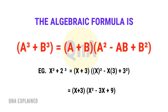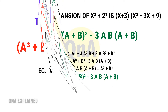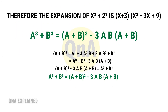Example: x cubed plus 3 to the power of 3 equals x plus 3, times x squared minus x times 3 plus 3 to the power of 2, which equals x plus 3, times x squared minus 3x plus 9. Therefore, the expansion of x cubed plus 3 cubed is x plus 3, times x squared minus 3x plus 9.